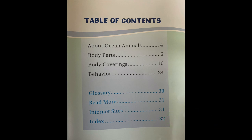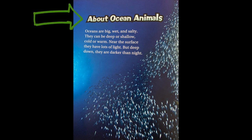That's interesting. That tells us this is a non-fiction book because it has a table of contents, it has a glossary, and it has an index. At the top in black outlined letters, it says About Ocean Animals. That is a heading, and the heading tells us what the page is going to be about.